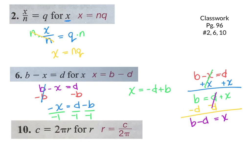For the last one, they want us to solve for R. We have C equals 2πR. What's happening between 2, π, and R on that side? Multiplication. So you can divide everything by 2π at the same time when it's all multiplication. You end up with C over 2π equals R.